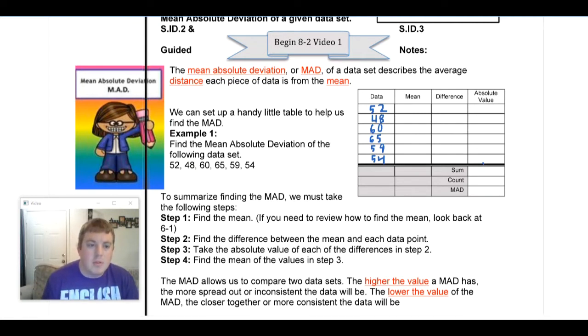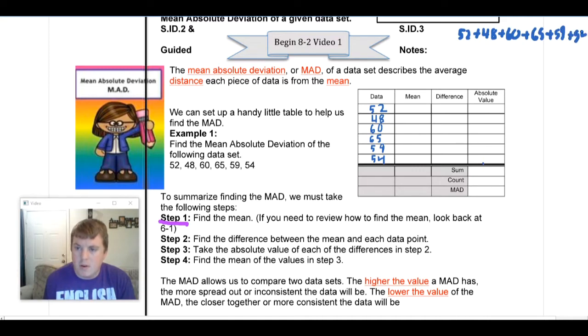Alright, so after I do that, I'm going to look down at my steps. Step one is to find the mean. We know how to find the mean. We can think back to lesson 8-1, but if you need a review, you can go there. We'll just do this real quickly. We're going to add all our numbers together: 52 plus 48 plus 60 plus 65 plus 59 plus 54, and we're going to divide by the total number of numbers we have, which is 6. So when we add those together, it's going to give us 338 divided by 6. We're going to round to two decimal places, and that's going to give us 56.33.